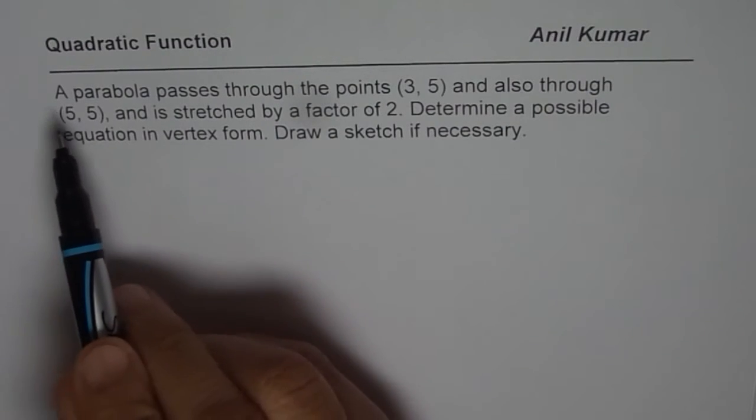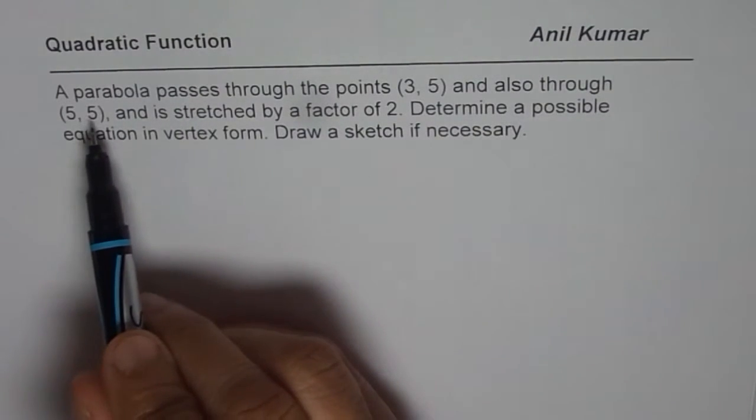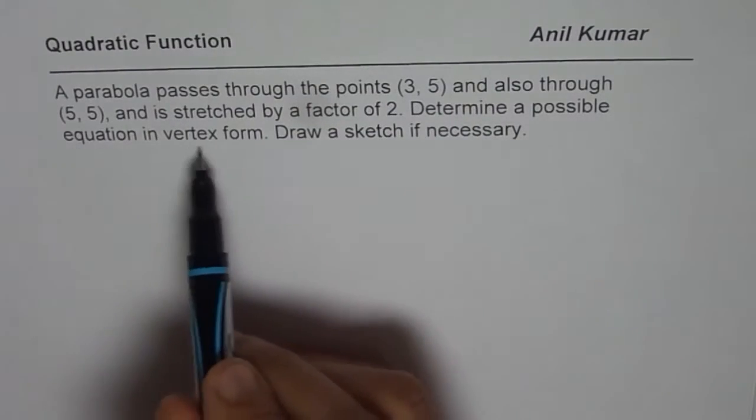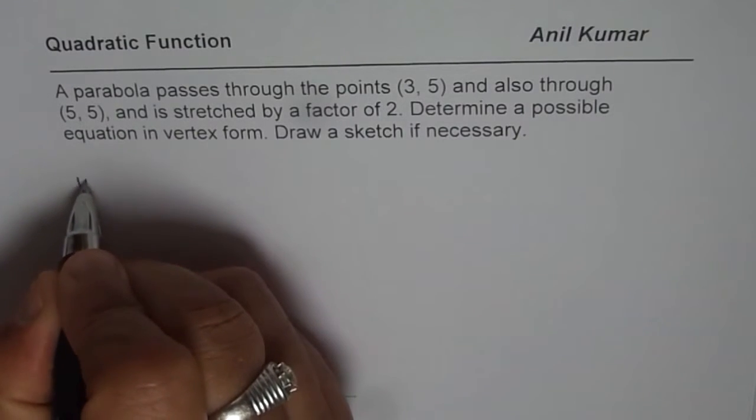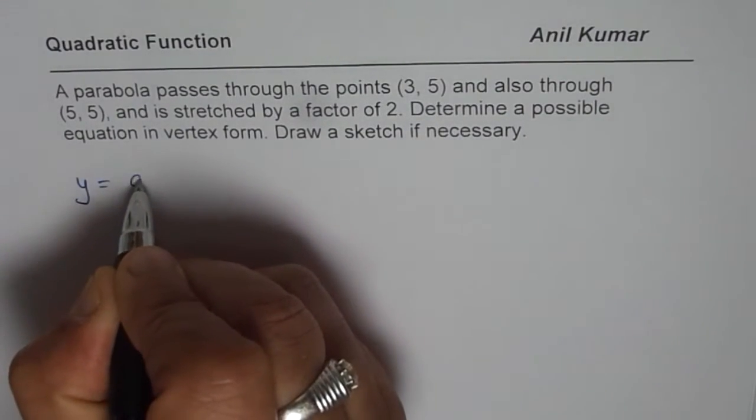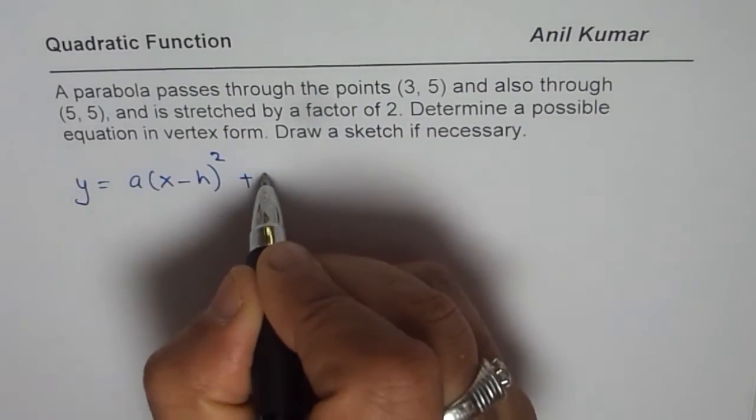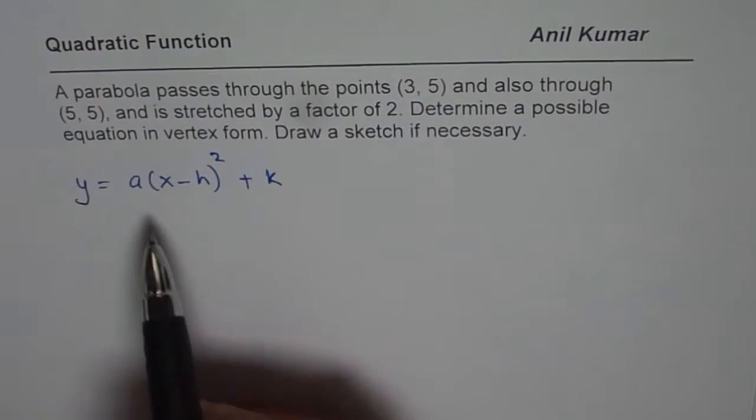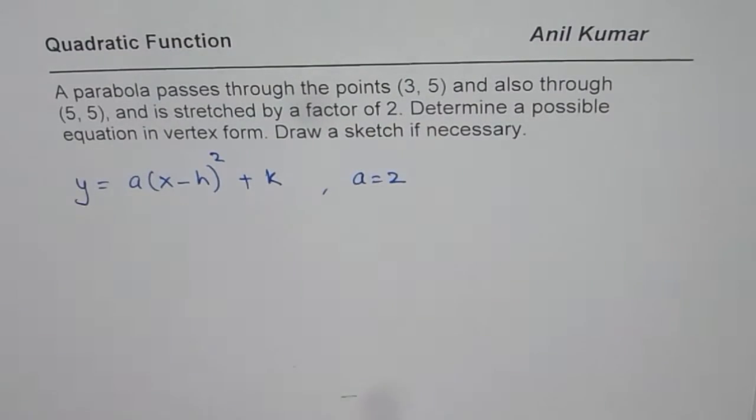Let us read it once again. A parabola passes through the points (3, 5) and also through (5, 5) and is stretched by a factor of 2. Determine a possible equation in vertex form. So, in vertex form, the equation will be y = a(x - h)² + k. That is equation in vertex form where the vertex is at (h, k) and a is your stretch factor. We are already given a = 2.